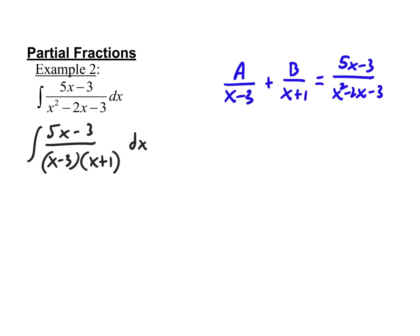We're going to essentially break the bottom up and create two new fractions. These two new fractions — their sum — will equal what we have here. What this allows us to do is to integrate each of these fractions individually, and typically that makes integration easier. The trick is figuring out what A is and what B is, and if there was a third one, we'd have a C.